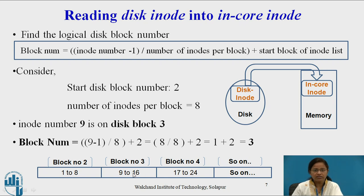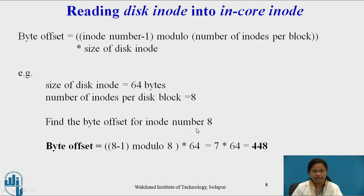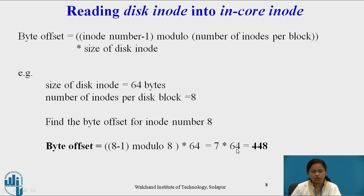Once we get the block number of the disk inode, the task is to read the content of this disk inode into the in-core copy. For that, we require a byte offset. The byte offset is calculated using: byte_offset = ((inode_number − 1) mod (number of inodes per block)) × (size of disk inode). The modulo operation gives the remainder. Consider the size of disk inode equal to 64 bytes and number of inodes per disk block equal to 8. For inode number 8: byte offset = (8 − 1) mod 8 × 64 = 7 mod 8 × 64 = 7 × 64 = 448. So for inode number 8, the byte offset is 448, from where the kernel reads the content of the disk block into the i-node.